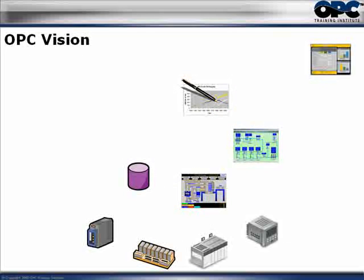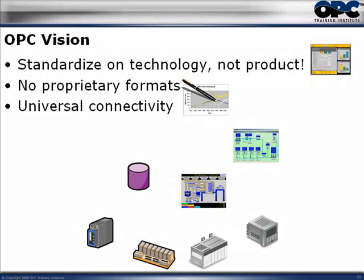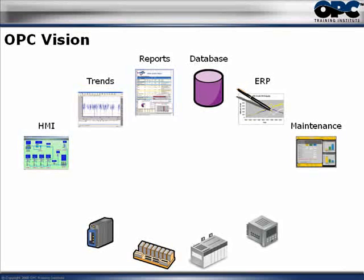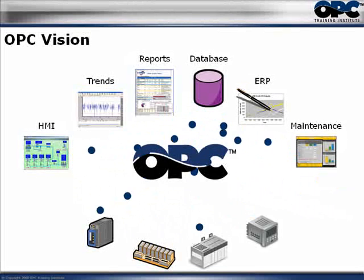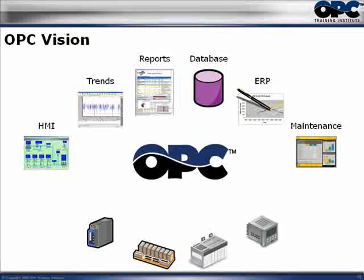It was due to these problems that OPC came about. The vision of OPC is to standardize on a particular technology, not a product. There are no more proprietary formats for data or data paths, and as a result you get completely universal connectivity. Once your data is converted to OPC, every application can start speaking with every other application. OPC is really no more than a language translator — just like standardizing on speaking English enables communication across different native languages.